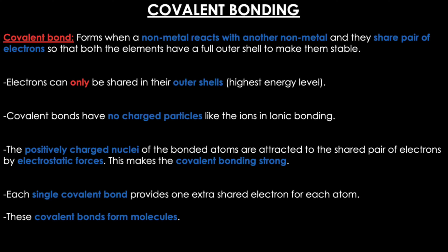Covalent bonding. A covalent bond forms when a non-metal reacts with another non-metal and they share a pair of electrons so that both elements have a full outer shell to make them stable. Electrons can only be shared in their outer shells, which is the highest energy level. Covalent bonds have no charged particles like the ions in ionic bonding. The positively charged nuclei of the bonded atoms are attracted to their shared pair of electrons by electrostatic forces, which makes covalent bonding strong. Each single covalent bond provides one extra shared electron for each atom, and these covalent bonds form molecules.